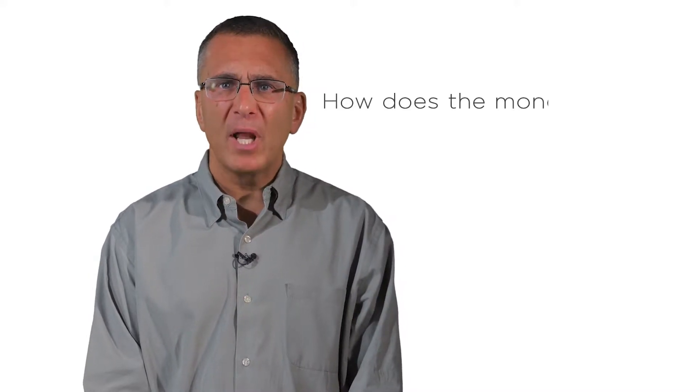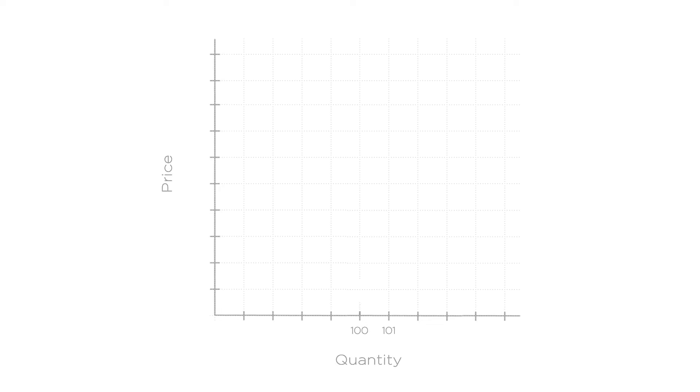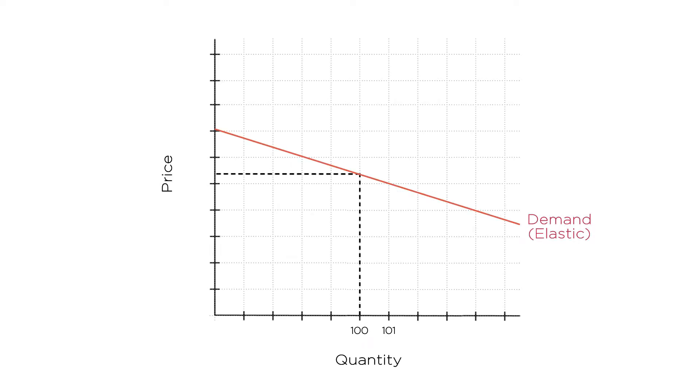Armed with the basic intuition of monopoly profit maximization, let's dig a little deeper and ask, how does the monopoly price depend on the elasticity of demand? Think about a good with very elastic demand, and therefore a relatively flat demand curve. For a good like this to sell one more unit, the monopolist doesn't need to lower the price much. Just a small reduction will do the trick.